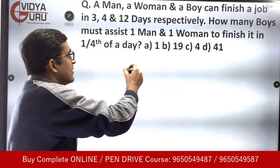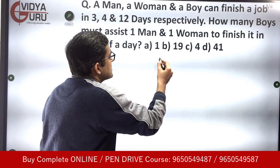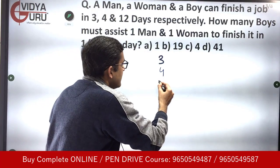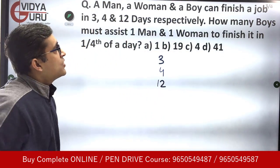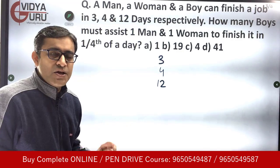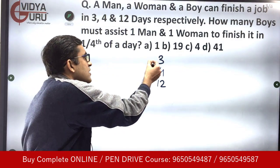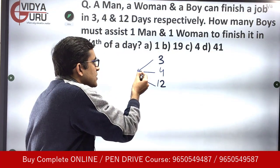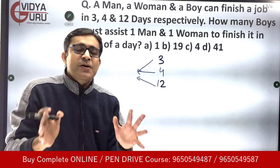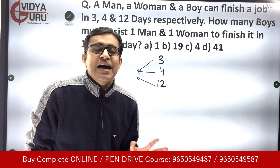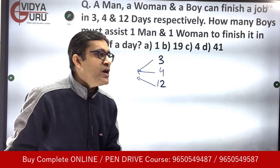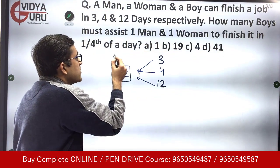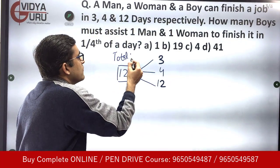A man takes 3 days, a woman takes 4 days, and a boy takes 12 days. We take the LCM of 3, 4, and 12, which turns out to be 12. This 12 is the total work — the total units of work that need to be done.